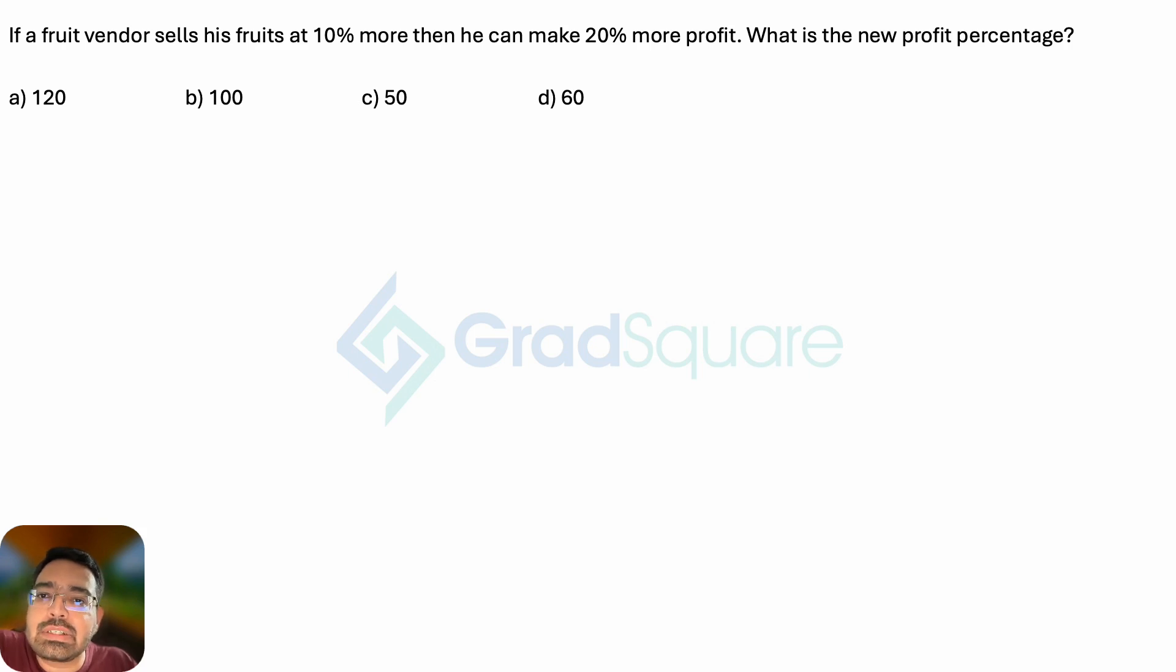A fruit vendor sells his fruits at 10% more, then he can make 20% more profit. What is his new profit percentage?